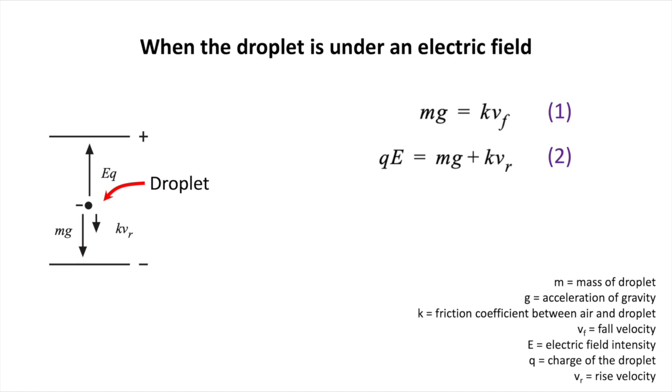The situation, of course, changes when there is an electric field. In this case, the drop is rising and when we balance the forces, we get to equation 2.